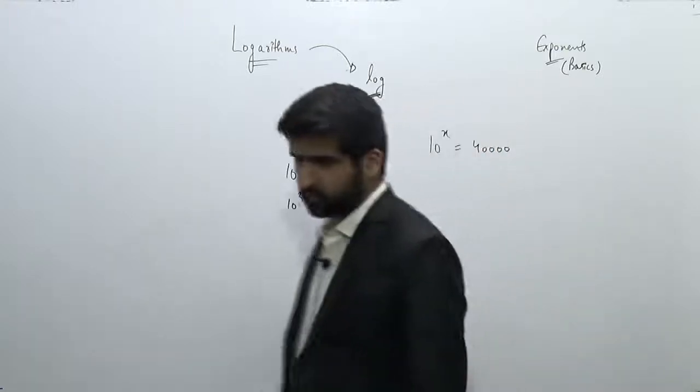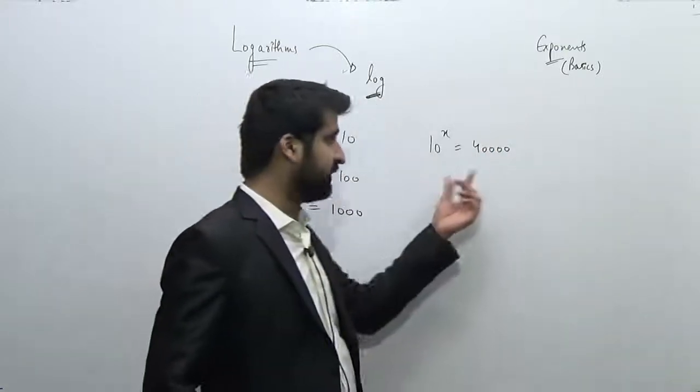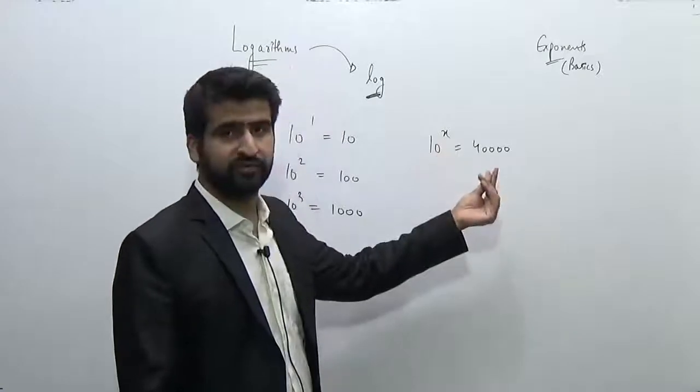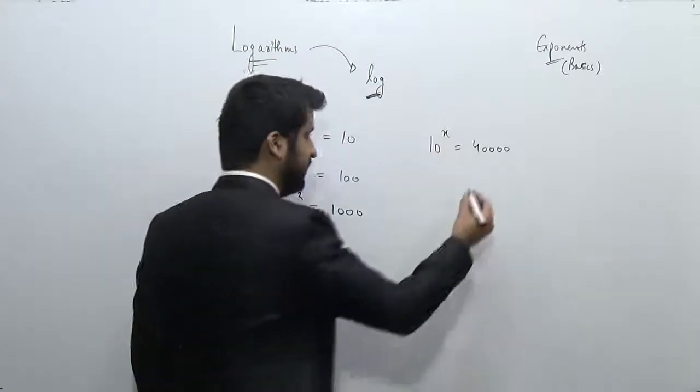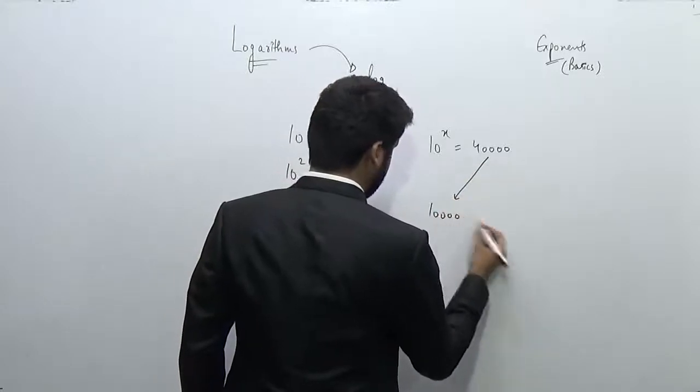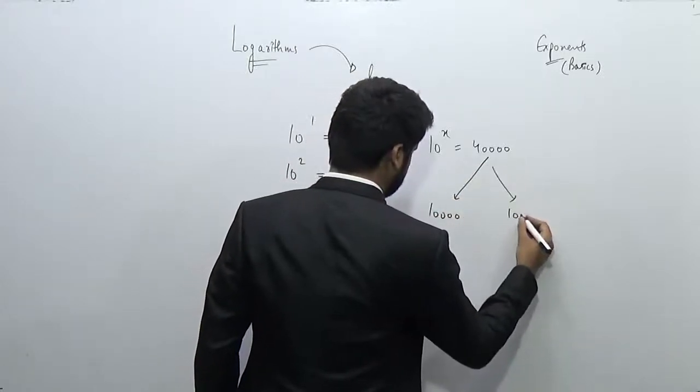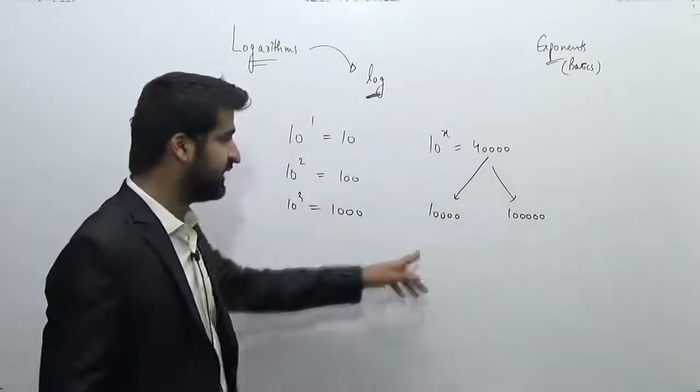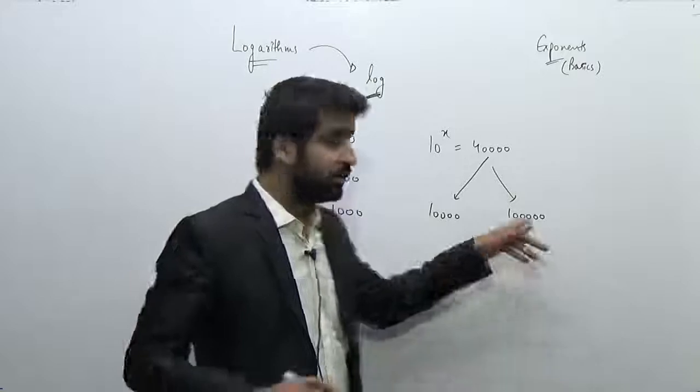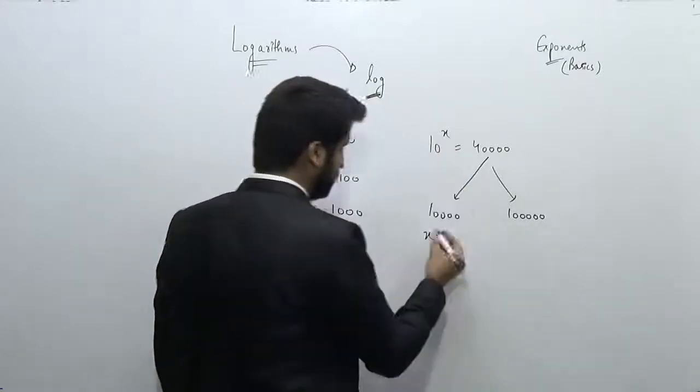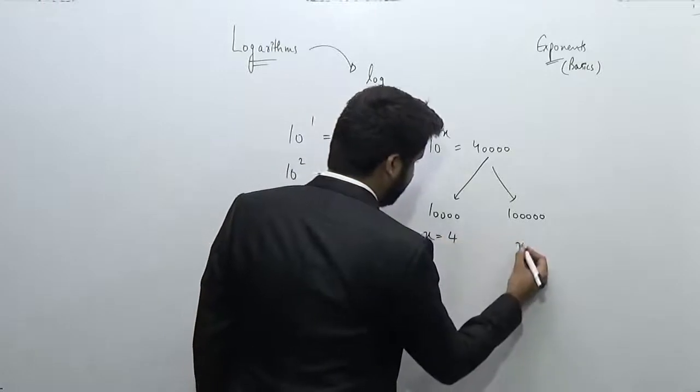But what if I ask you what power of 10 gives us 40,000? Can you tell me what power of 10 will give you 40,000? You cannot determine the actual value of x, but you know one thing: since 40,000 lies between these two numbers, 40,000 lies between 10,000 and 100,000.